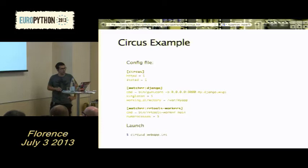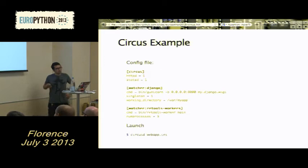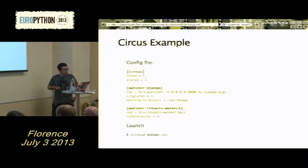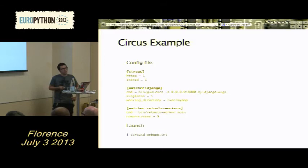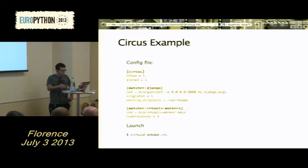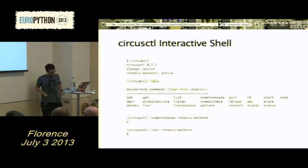Circus, like SupervisorD, uses an INI file. You create a file and add watcher sections — each watcher is a program that Circus will start and watch, with a command provided for each. We have a plethora of options; in this example I'm setting a working directory and saying I want to run five Rq workers. Then you run Circus by pointing it at the config file, exactly like you would with SupervisorD, with options like running as a daemon.